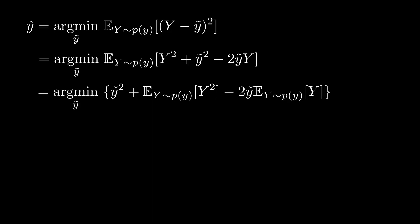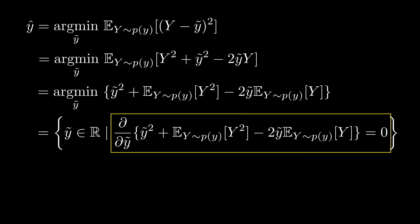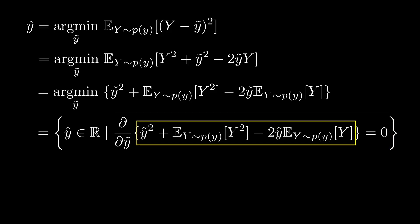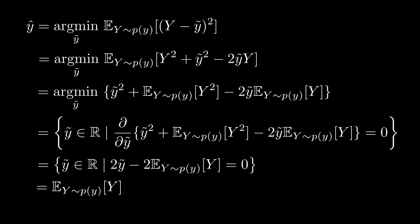From the first derivative test, which states that the first derivative at the location of a minimum will be 0, note that the objective function will be minimized for a set of y tilde values that satisfy this equation. So we need to set the first derivative of this term with respect to y tilde to 0, which results in y hat being equal to the expected value of capital Y.